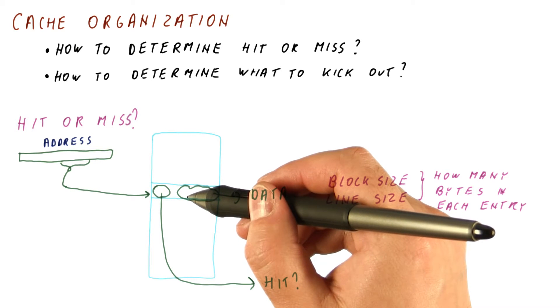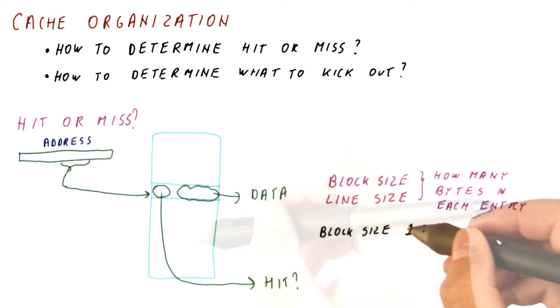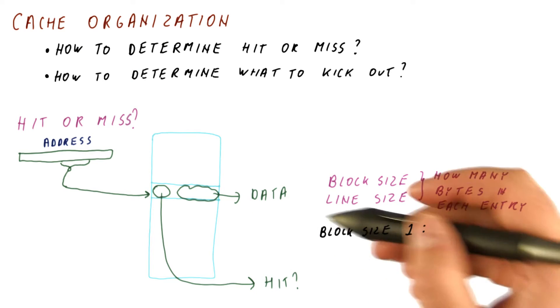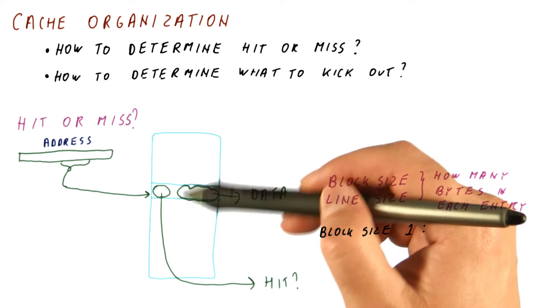If we have only one byte per entry, then every address will map to a different entry. If we have a block size of one, that means the entry in the cache is only one byte, every single byte address will have a different entry.